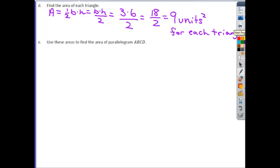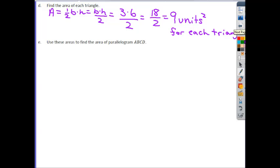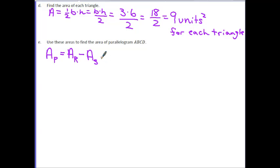Part E says, use these areas to find the area of parallelogram ABCD. So what I want you to notice here is we now know the area of the entire rectangle we created. We know the area of each triangle we created. So if we take the area of the rectangle and take out the area of the two triangles, we'd be left with parallelogram P. So let's just write our plan of attack first. The area of the parallelogram P is equal to our entire area of our rectangle, A sub R, take away the area of triangle S minus the area of triangle T. So this is my game plan for isolating parallelogram P from our figure.